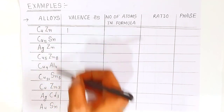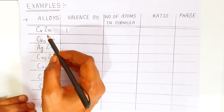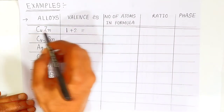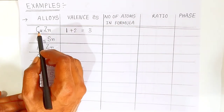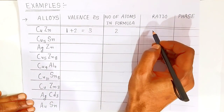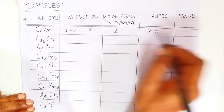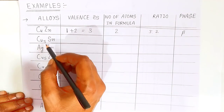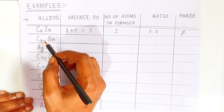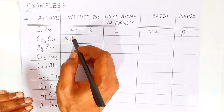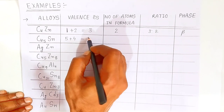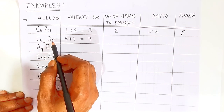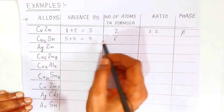Example: for copper-zinc alloy, the valence electron of copper is 1 and zinc is 2, so total number of valence electrons is 3. Number of atoms: copper is 1 and zinc is 1, so total is 2. When you take the ratio it will be 3/2. The phase of copper-zinc alloy is beta, which is BCC.